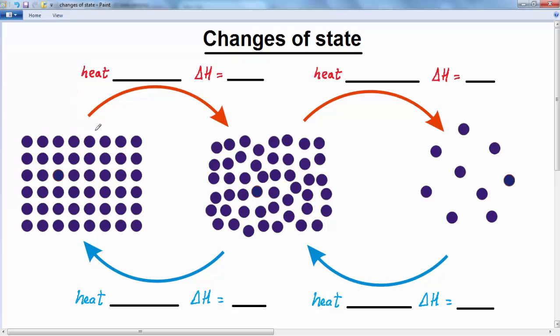The four changes of state which can occur is from a solid to a liquid, we call that melting. And then from the liquid to the gas state, that is known as evaporation. Going in reverse from the gas state back into the liquid, that is called condensation. And finally from the liquid back into a solid state, we call that solidification or solidifying.